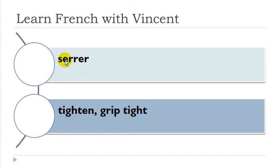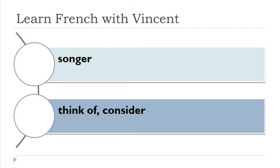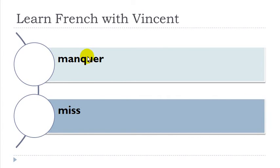Serrer. Interesting here because you get this double 'r' — and 'er' after that — it will open the sound of 'e', so you pronounce it like 'a'. Serrer. Serrer. Songer. Manquer. Remember: after 'q' you automatically get 'u', but you don't pronounce the 'u'. So it's really 'k' — manquer. Nommer.